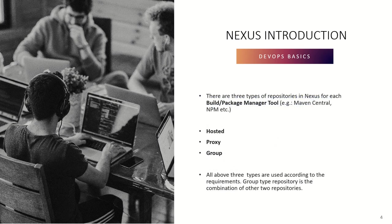In Nexus, there are multiple categories for creating a repository. There are three types of repositories for each build and package manager tool — such as Maven or npm. Each category has three repository types: hosted, proxy, and group. In Maven we'll have all three; in npm we'll have all three. Group is basically the combination of hosted and proxy. We'll discuss these three repository types in detail later in our slides.